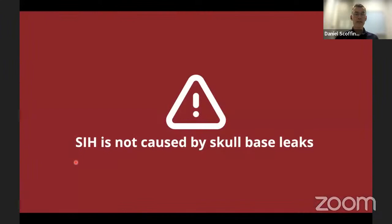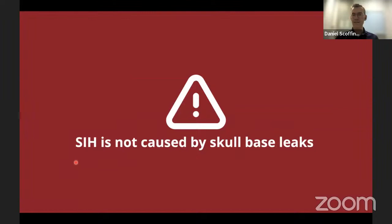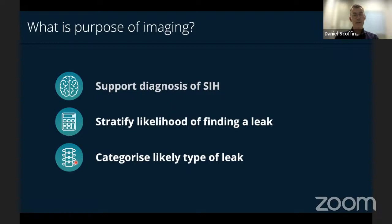An important thing often misunderstood: this clinical syndrome of SIH and its MRI appearances do not occur as a result of CSF rhinorrhea or otorrhea. If you see brain findings of SIH, we need to look at the spine for the leak — it's not coming from the skull base. The role of neuroradiology is firstly to establish the diagnosis of SIH by showing positive signs of CSF volume depletion on brain MRI, use scoring systems to stratify patients by likelihood of finding a leak at myelography, and with spine MRI, predict the type of leak to select an appropriate myelographic strategy.